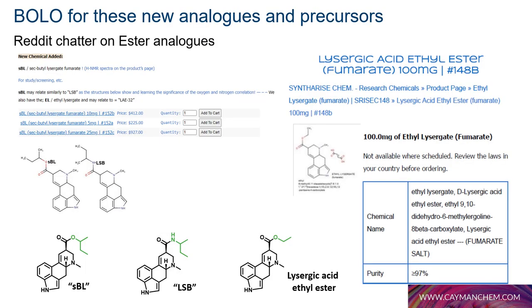A few new analogs have appeared on direct-to-user sites: SBL, LSB, and lysergic acid ethyl ester. SBL and LSB are esters, lacking the amide functionality required for psychedelic effects — these are likely masked precursors of lysergic acid that could be used in clandestine synthesis. LSB is essentially LSD with the ethyl chain moved to the CH2 group, forming a sec-butyl analog with likely diminished activity, though diminished activity doesn't prevent marketability on direct-to-user sites.